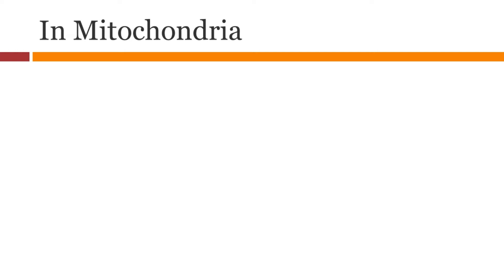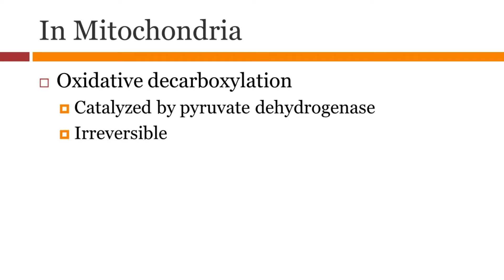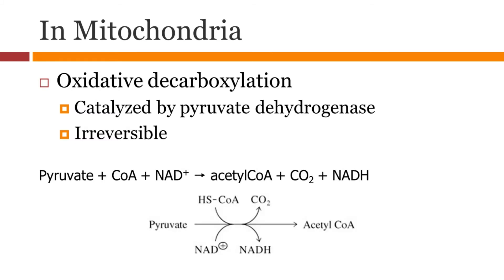Once the pyruvate is inside mitochondria, it goes through oxidative decarboxylation. It is facilitated by pyruvate dehydrogenase and is an irreversible process. Pyruvate is converted to acetyl-CoA. This produces one NADH. Here is the reaction.